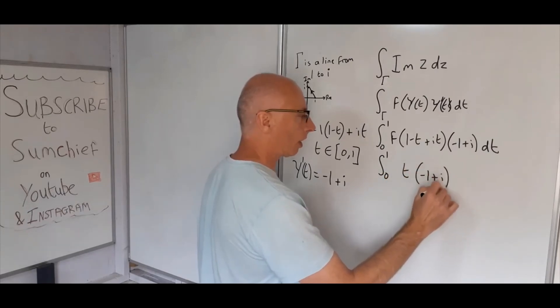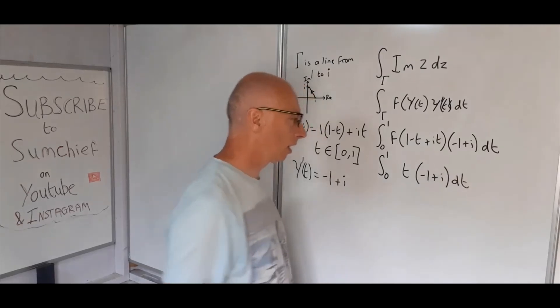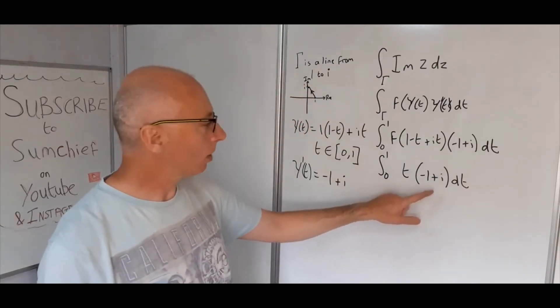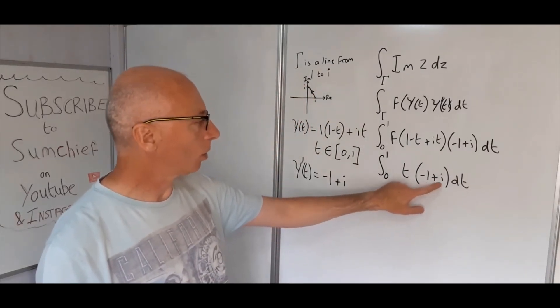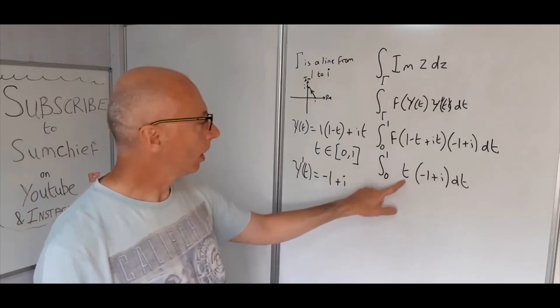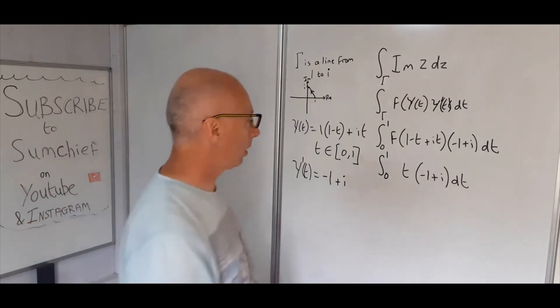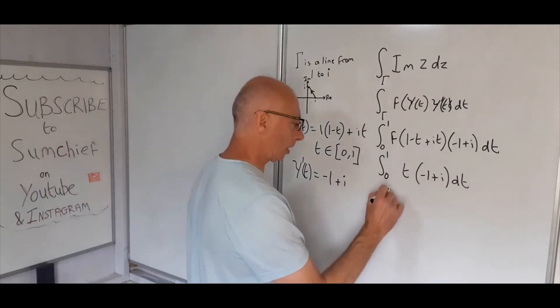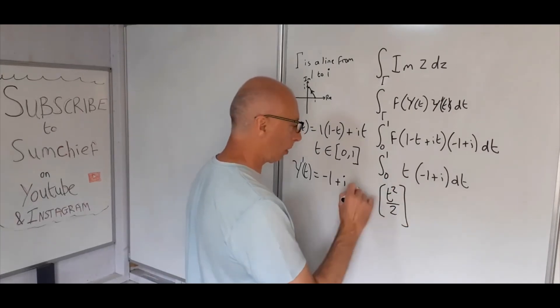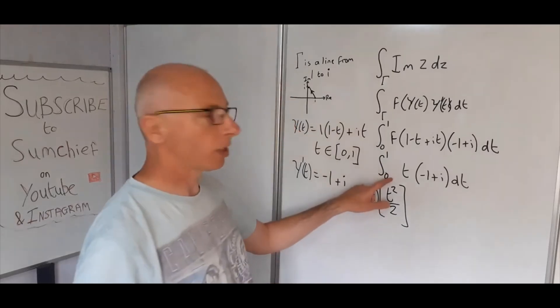We end up now with t squared over 2 multiplied by (-1 + i), and we go from 0 to 1.